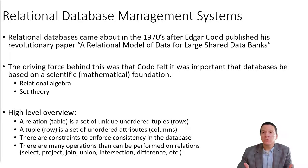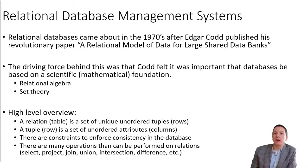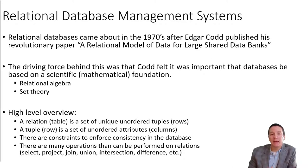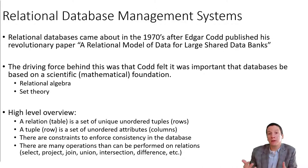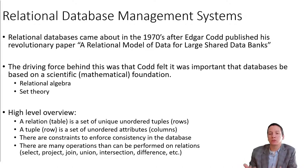Relational databases came about in the 1970s after Edgar Codd, who was working for IBM at the time, published a revolutionary paper called 'A Relational Model of Data for Large Shared Data Banks.' The driving force was that as Codd saw data becoming more and more important, he was worried that most data management strategies were willy-nilly and not based in any scientific foundation. So Codd, being a mathematician, came up with a mathematical representation of how we could manage data — called the relational system — based on set theory and relational algebra.